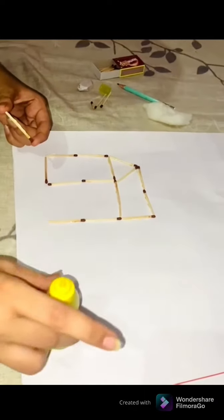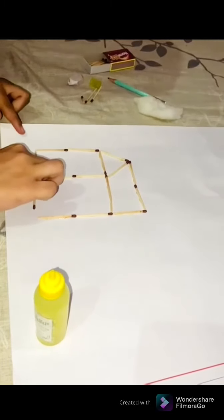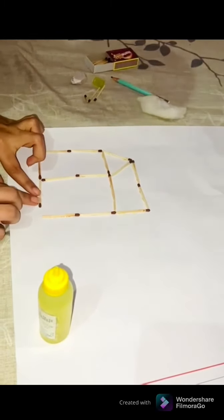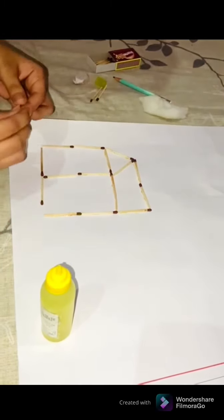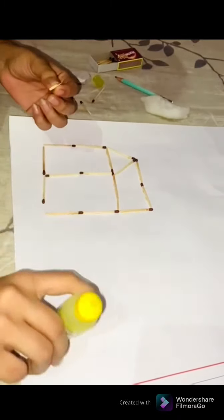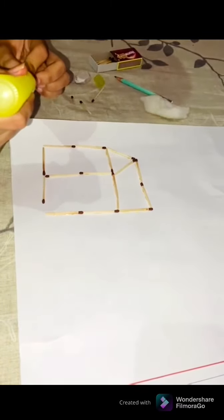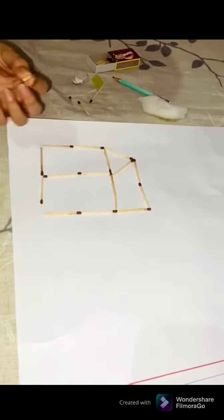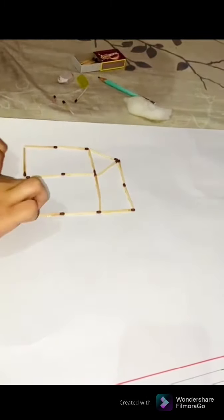When your hut is ready, if there's a difference or gap remaining, take a matchstick, break it a little, apply glue and paste it to fill that gap.